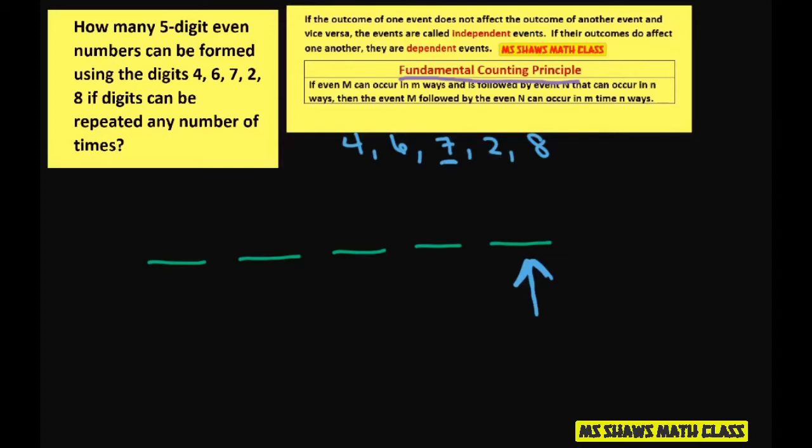So for our last position, out of these 5 digits, we only have 4 even numbers: 4, 6, 2, and 8. So you only have 4 choices there.